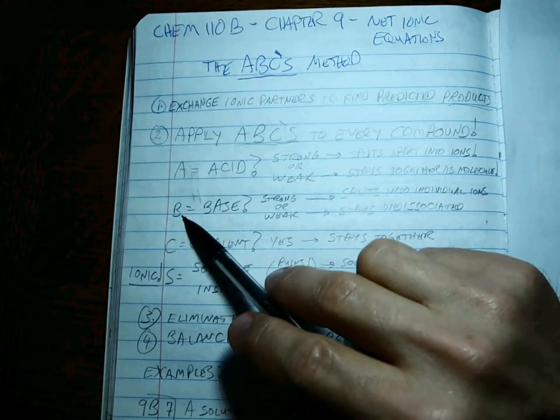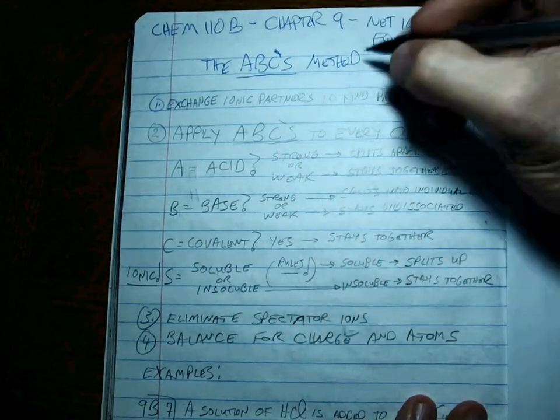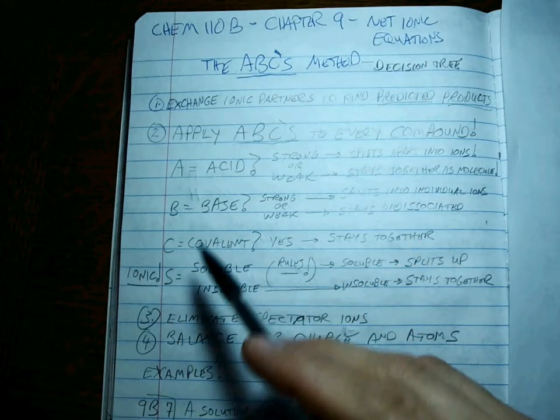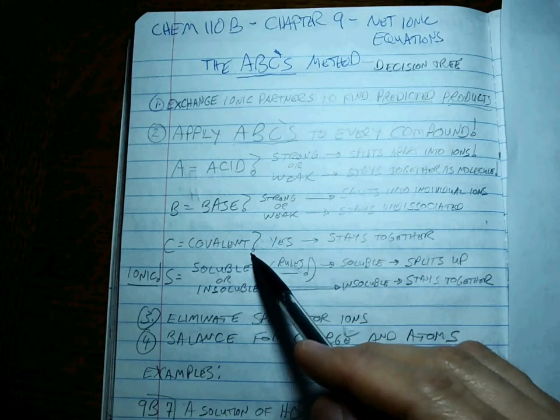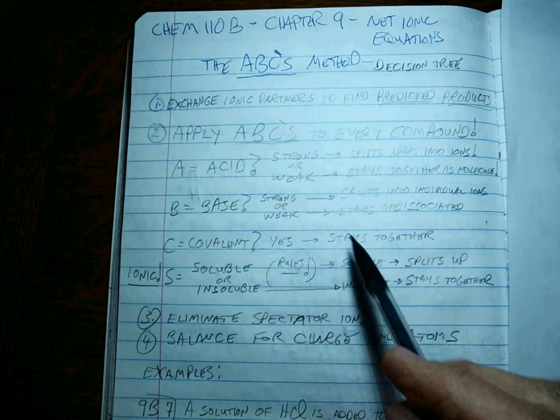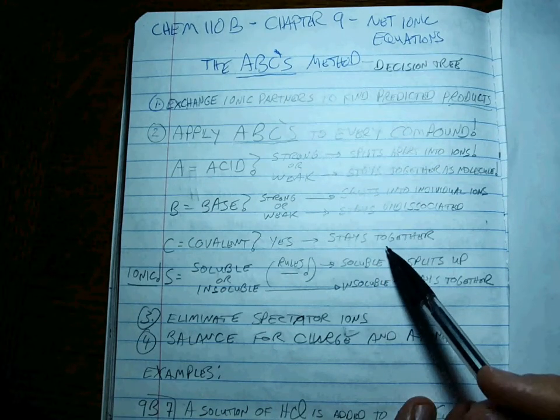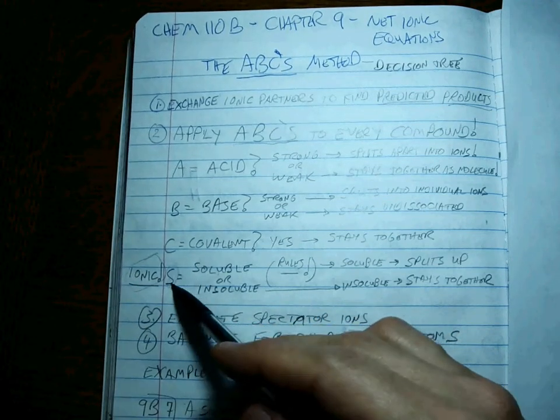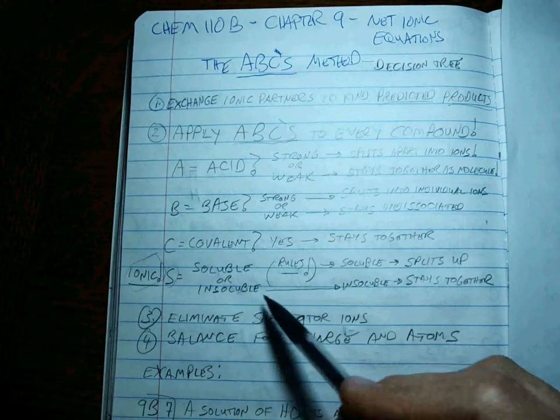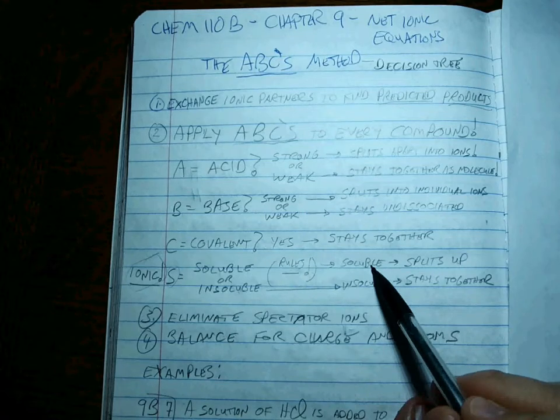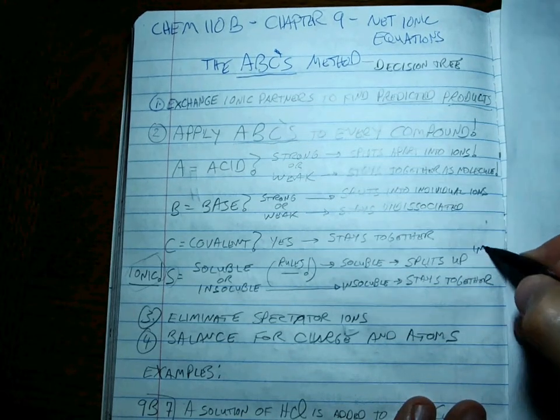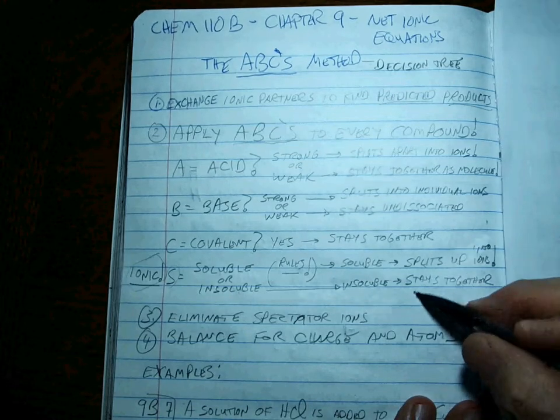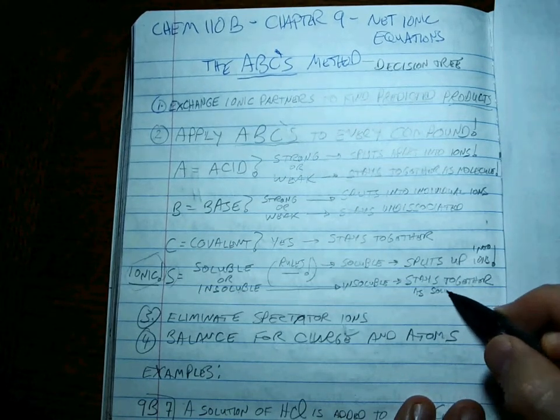If it's not an acid, and it's not a base, the ABCs are a decision tree. Then C means covalent. If it's covalent and you say yeah, I know that's a covalent compound, that means it stays together. If it's not an acid, and it's not a base, and it's not covalent, then it must be ionic. And if it's ionic, the S has to do with soluble or insoluble. That's about knowing those solubility rules. If it's soluble, that means it splits up into ions. And if it's insoluble, it stays together as a solid, all together.